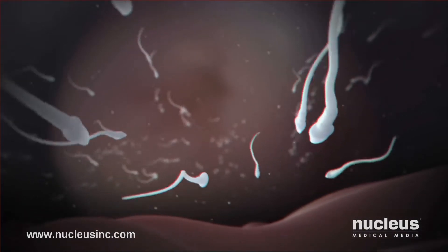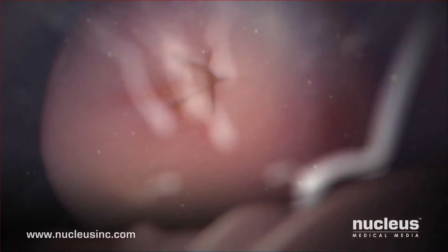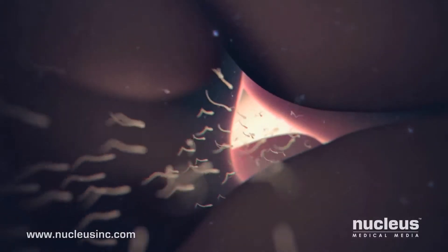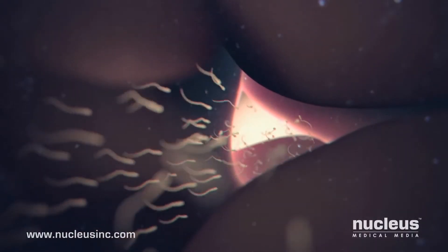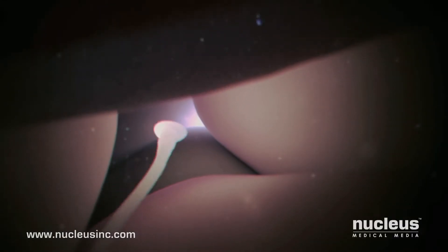Next, the sperm must pass through the cervix, an opening into the uterus. Usually, it remains tightly closed, but here the cervix is open for a few days while the woman ovulates. The sperm swim through the cervical mucus, which is thinned to a more watery consistency for easier passage.